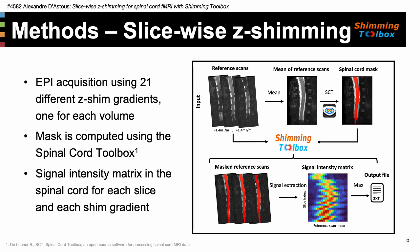This segmentation serves as the region of interest used for shimming. The z-shimming procedure consists in finding the z-shim gradient that maximizes the signal intensity in the spinal cord for each slice. To do so, a signal intensity matrix is calculated that includes information about each slice and each EPI volume. The maximum signal intensity of each slice in that matrix is used as the z-shim gradient for that slice. A text file is generated with the appropriate information and can then be used by the custom EPI sequence to perform slicewise z-shimming.